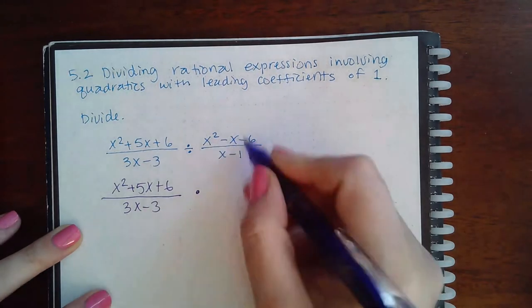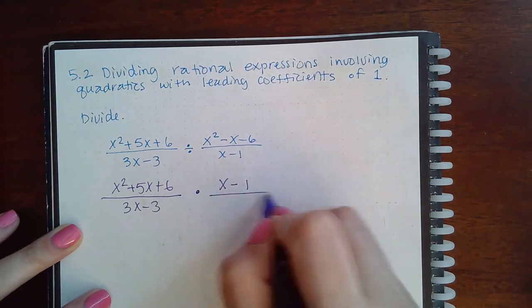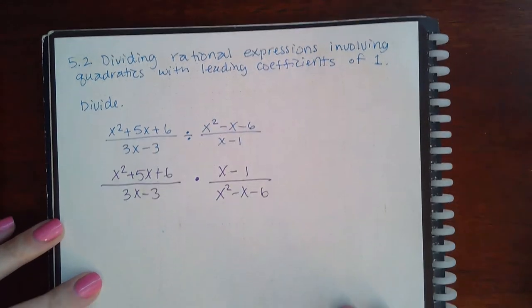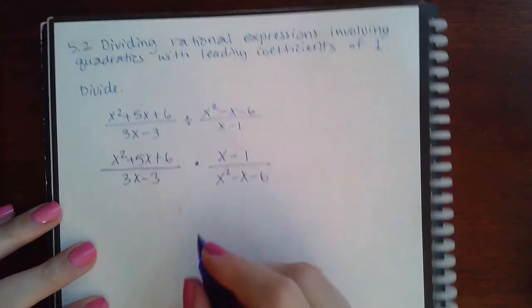change this to multiplication, and flip the following fraction after the division symbol, or to the right of the division symbol. And then you factor each piece that you can.